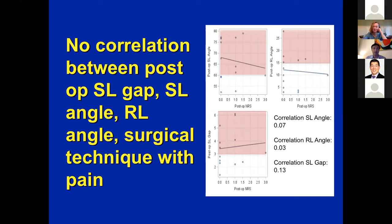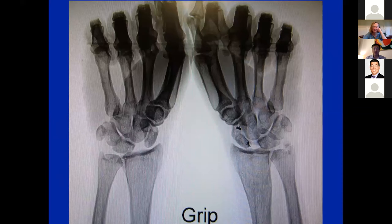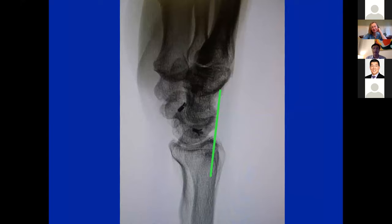Here's a case — a patient three years post-op from scapholunate repair with no complaints. On the standard PA x-ray, the SL looks good. But on a clenched pencil view, it's gapped open. However, on the lateral, the scaphoid is not kicked out. And this patient, as described, is not symptomatic post-op. You can also use scope to evaluate this using the Geissler grading system arthroscopically, and the staging system from Dr. Wolf available in the literature.